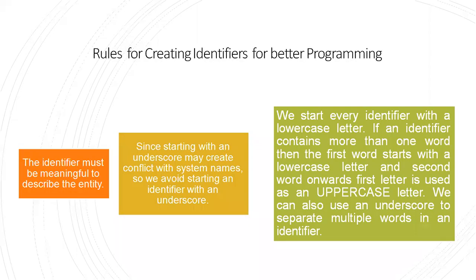Coming to the rules for creating identifiers for better programming: the identifier must be meaningful to describe the entity. Since starting with an underscore may create conflicts with system names, we should avoid starting an identifier with an underscore. We start every identifier with lowercase letters. If an identifier contains more than one word, the first word starts with a lowercase letter and the second word onwards uses an uppercase first letter. We can also use an underscore to separate multiple words in an identifier.